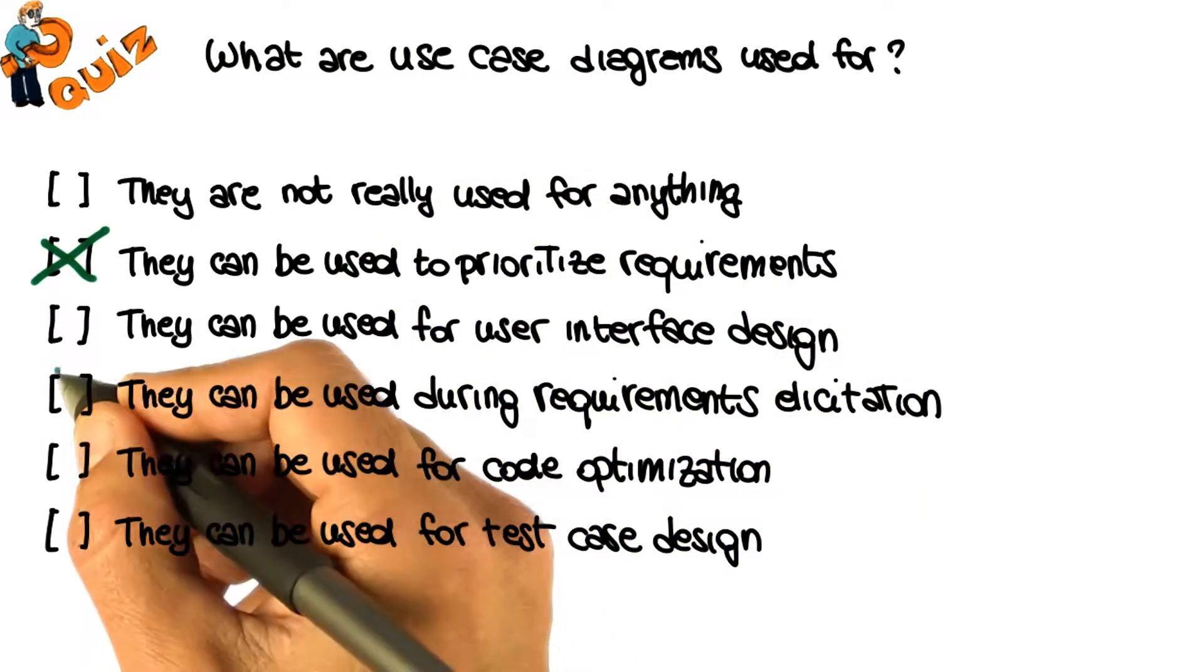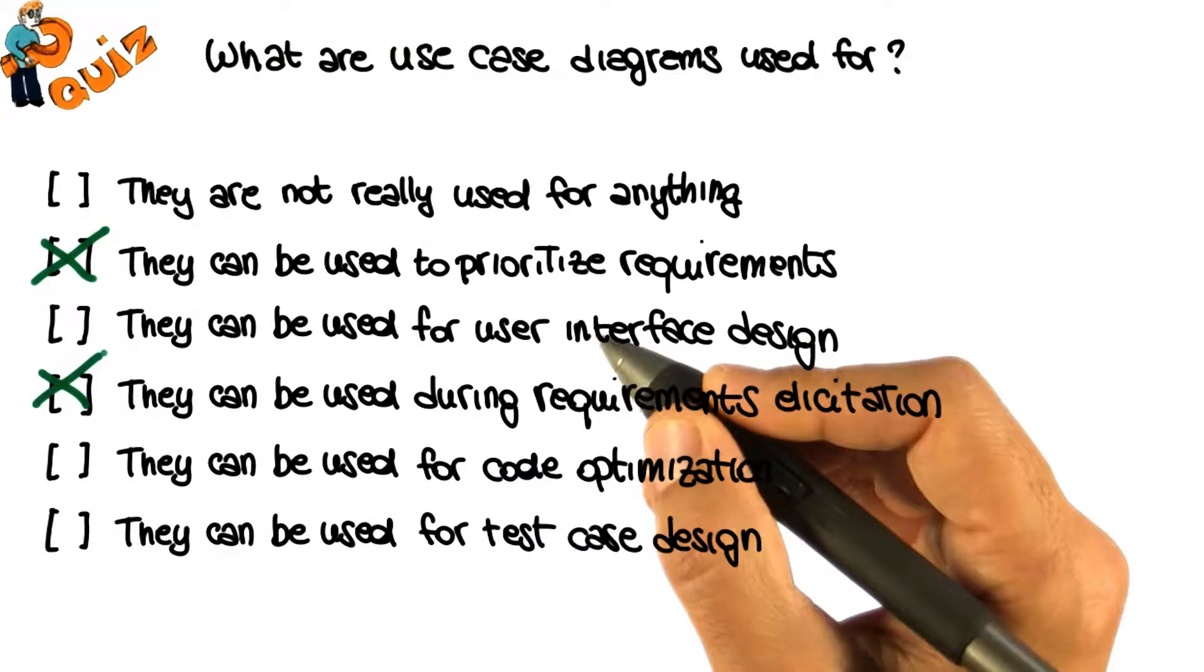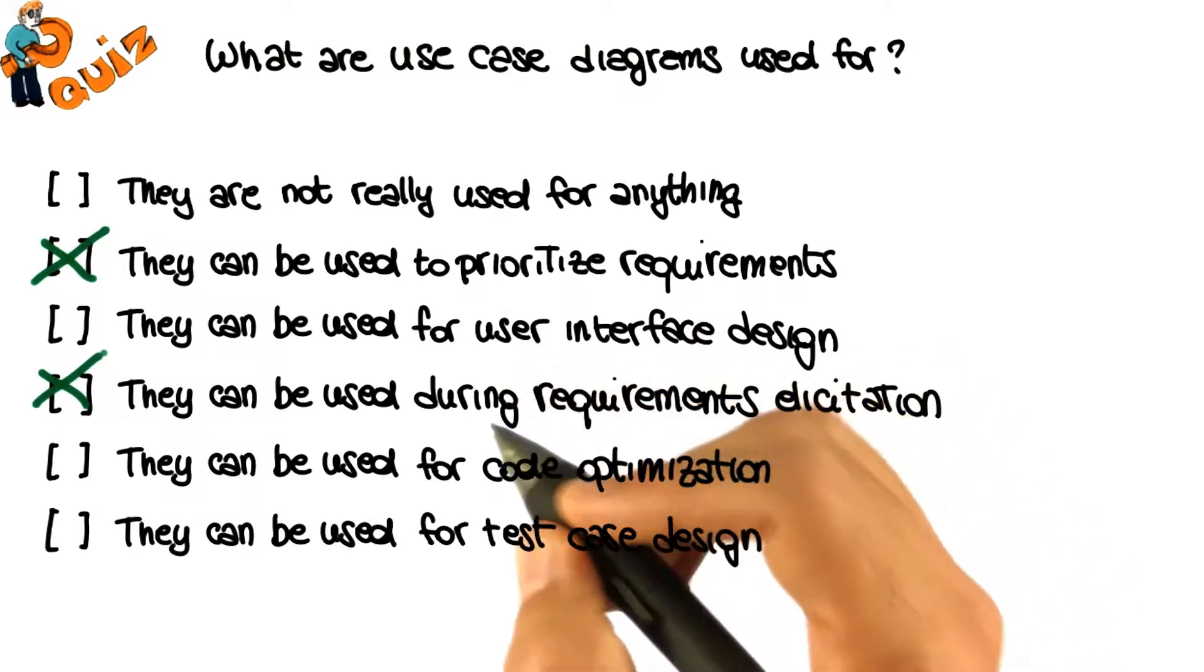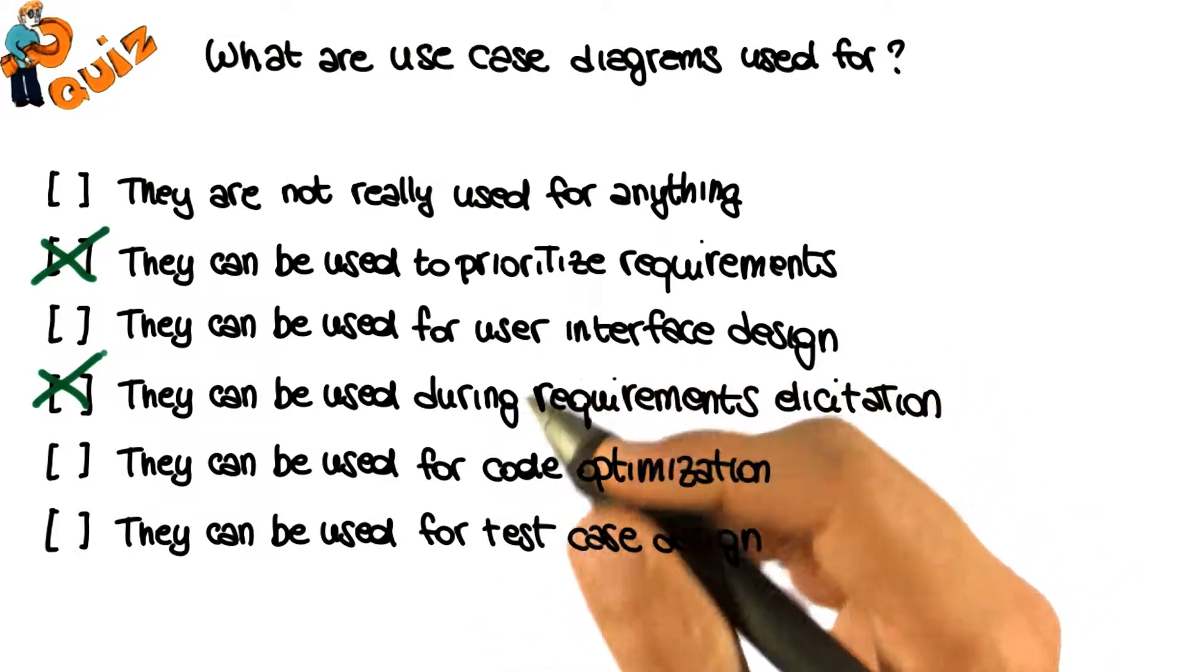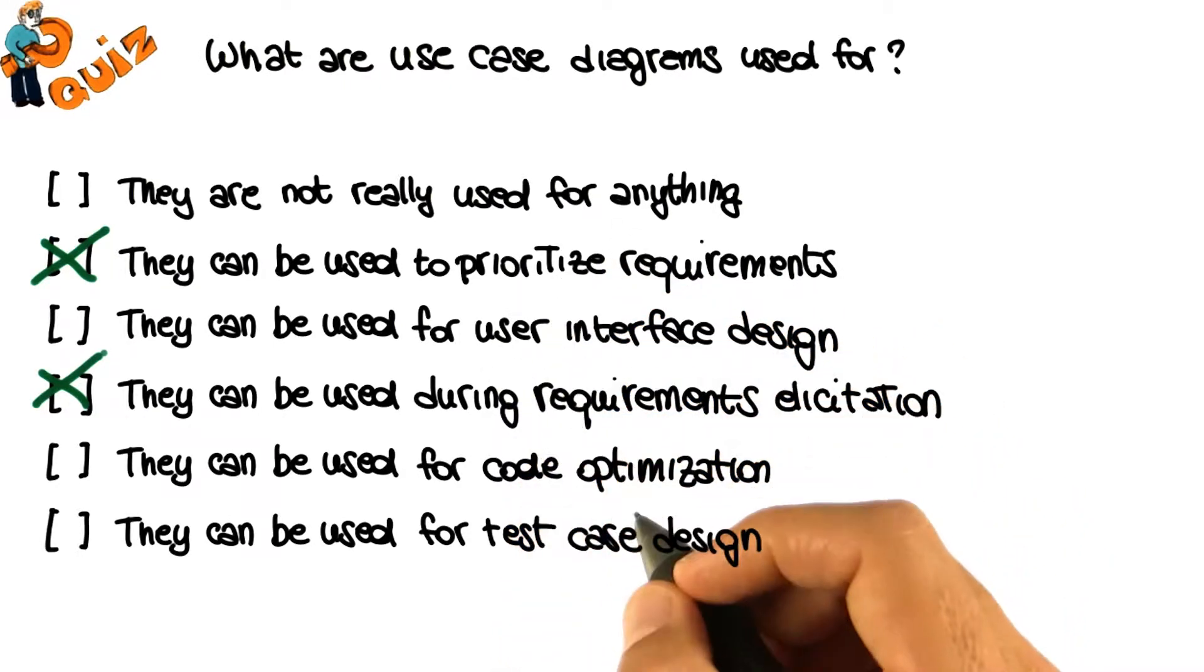The next correct answer is that they can be used for requirement elicitation. Why? Because use cases express what the system is supposed to do for each user. They are an ideal way to collect, represent, and check functional requirements. We'll also get back to this.